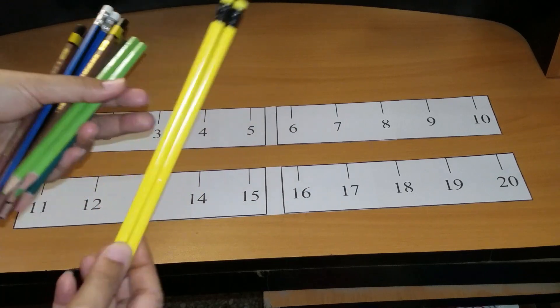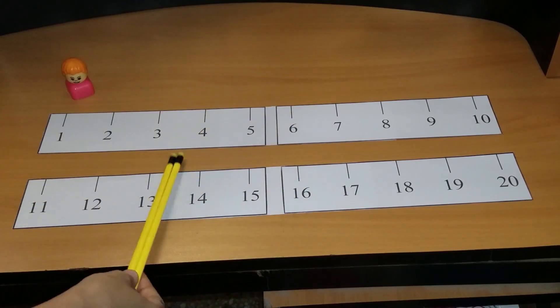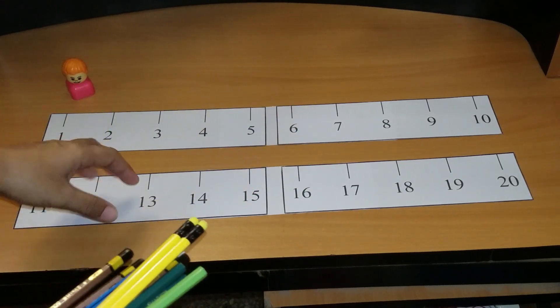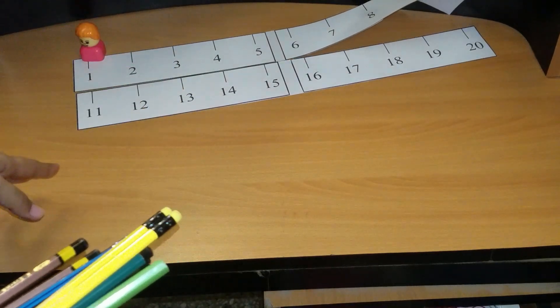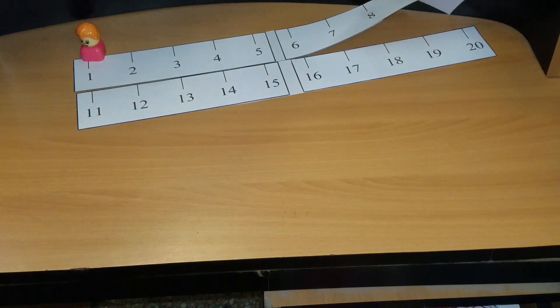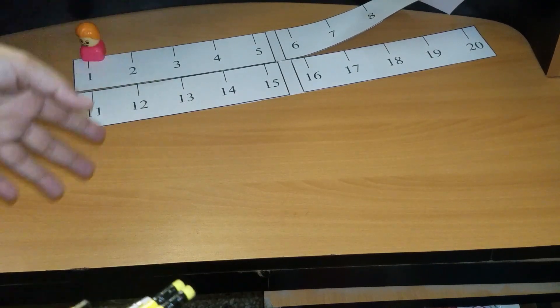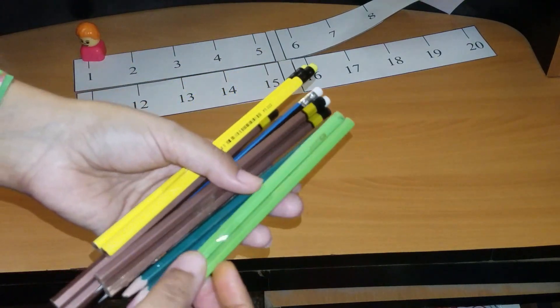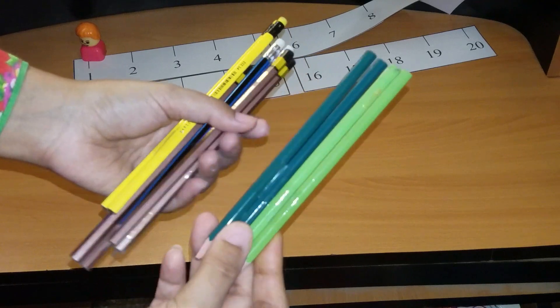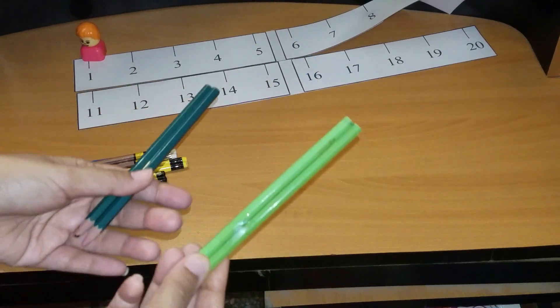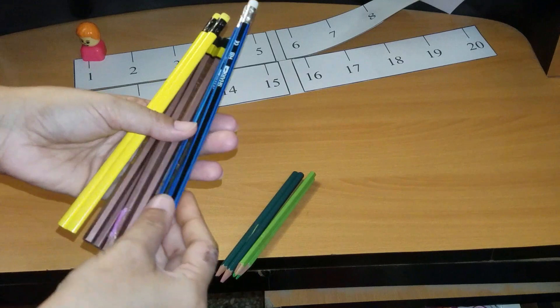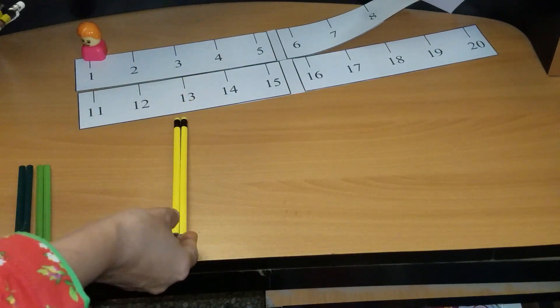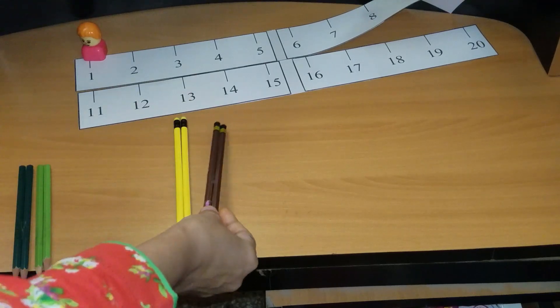There is one small activity also of how to learn skip counting. You can see here that I have some pencils in my hand and I have joined two two pencils. So in this way, ask your child to count the pencils in two two numbers. So this is also a very easy way of making the child learn skip count by twos, skip count by threes, skip count by fours, fives, tens.